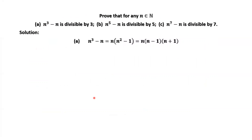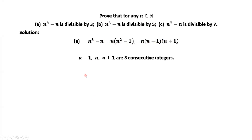Let's prove the first result. By factoring, we have N to the power of 3 minus N equals N times N squared minus 1, which equals N times (N minus 1) times (N plus 1). These three numbers are consecutive integers. Therefore, N to the power of 3 minus N is divisible by 3, because at least one of these numbers must be divisible by 3.